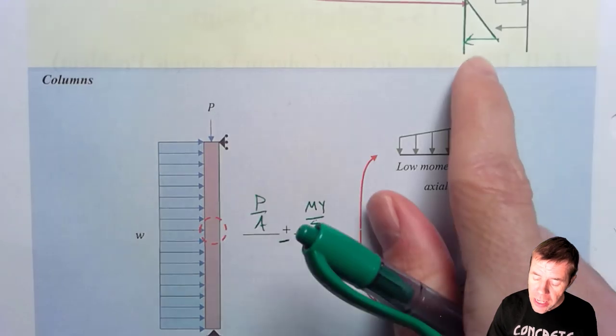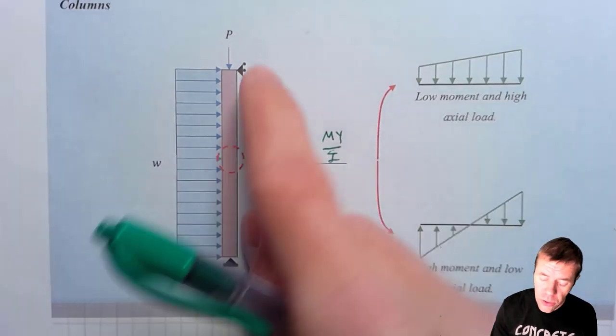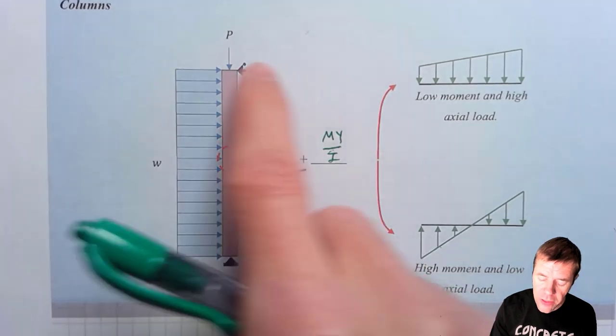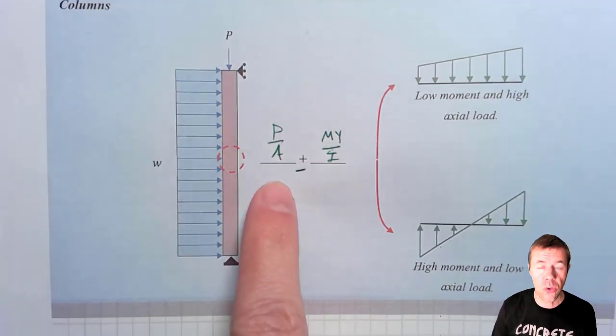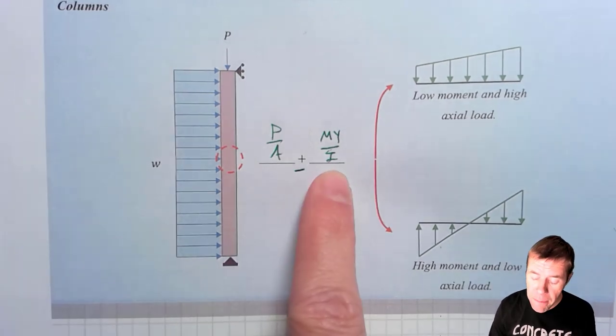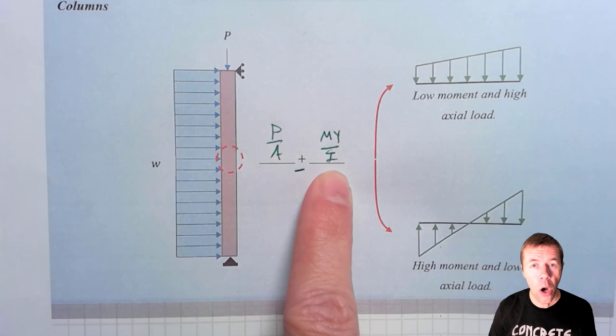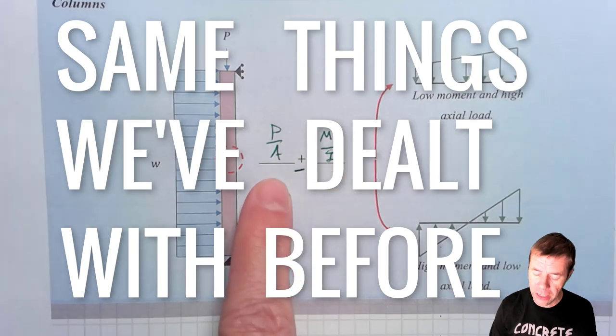Now in a column, it is going to be somewhat similar. It's going to be turned on its side. It's still a simply supported beam loaded like this, but now it has an axial load on it. Now the stresses that this structure is going to see, it's going to be axial load P over A and it's going to be bending MY over I. Same things we've been dealing with before. We're just adding axial load onto it.